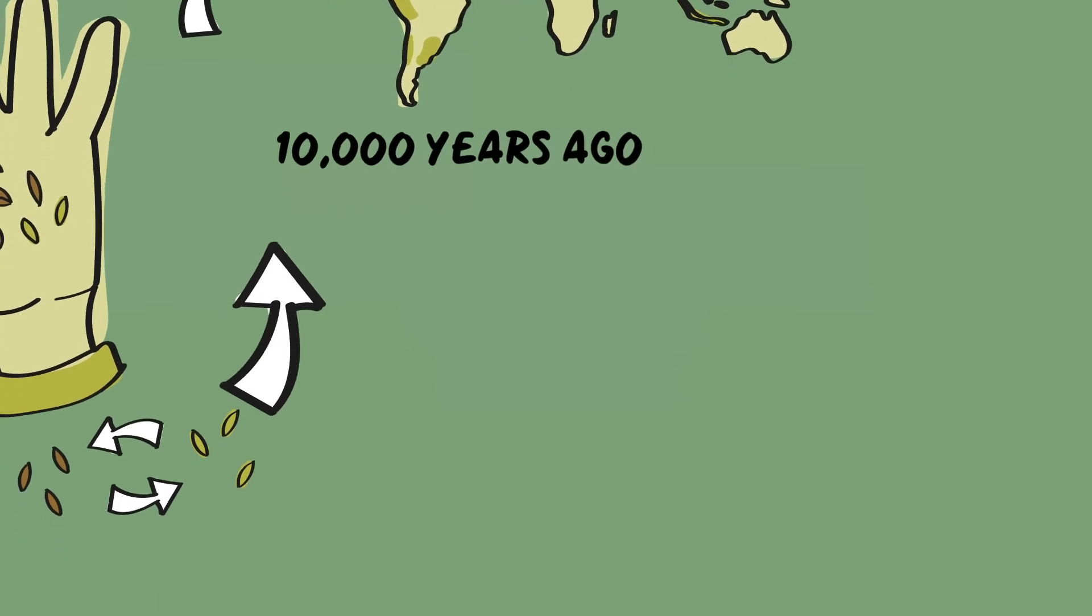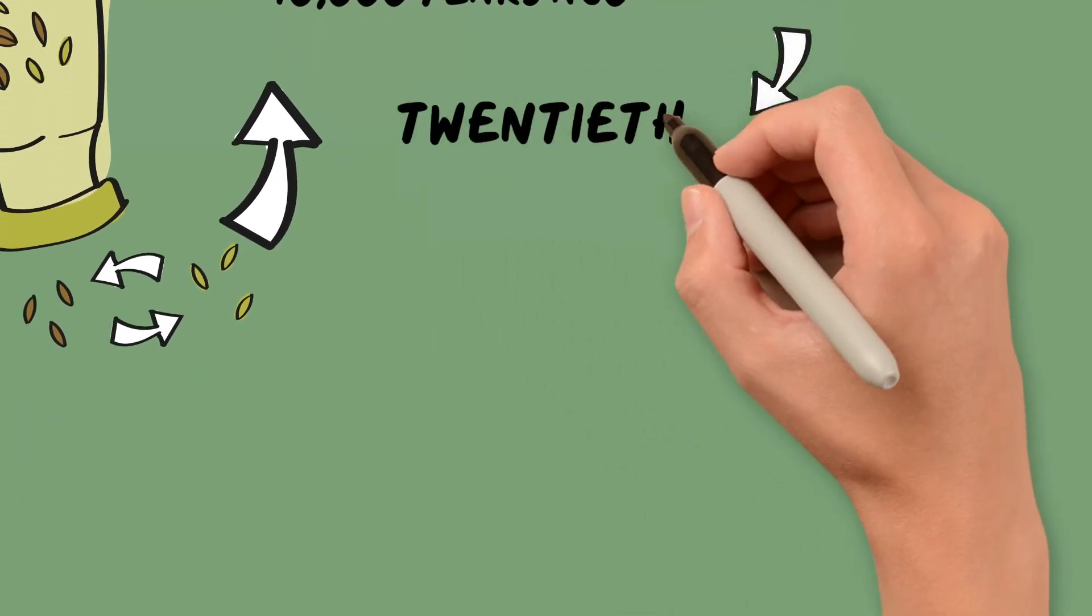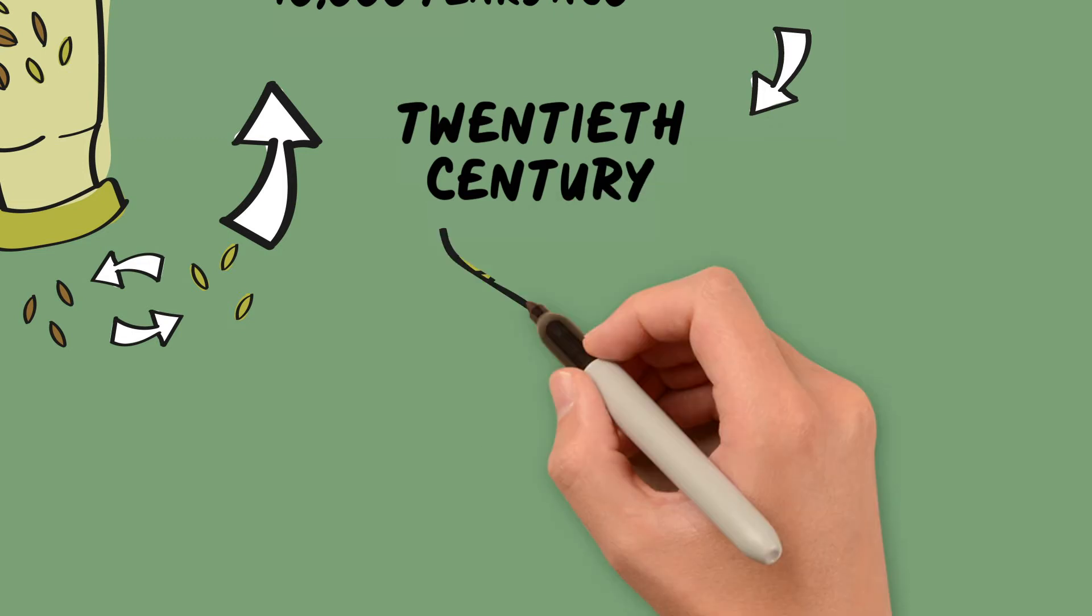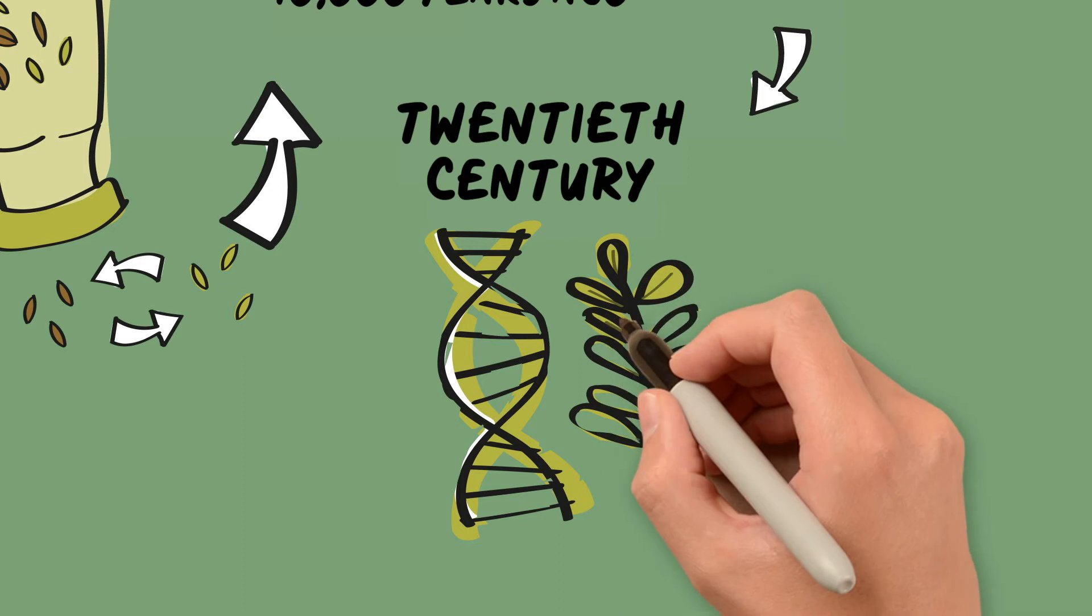gradually differentiating from the original strains. Things changed rapidly during the 20th century when modern genetics was applied to plant breeding, producing improved or high-yielding varieties.